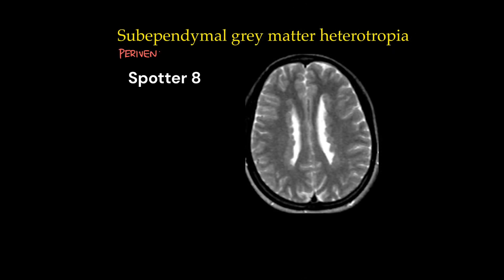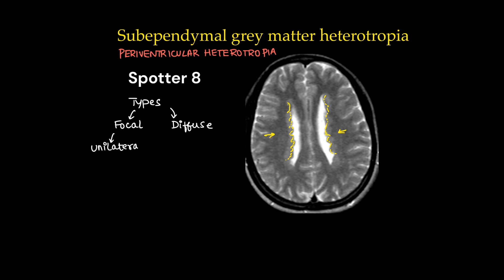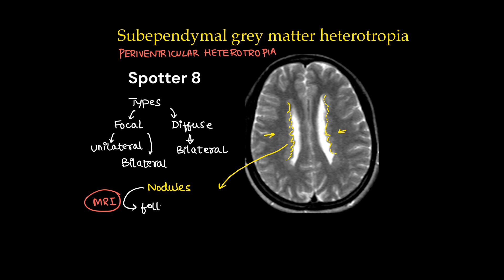Spotter 8 is a classic example of cortical malformation of gray matter — this is subependymal gray matter heterotopia, also known as periventricular heterotopia. We can see ectopic location of gray matter, not where gray matter is usually seen. There are two types: focal and diffuse. Focal can be unilateral or bilateral focal; diffuse is of course bilateral. These gray matter nodules follow gray matter signal on all MRI sequences.